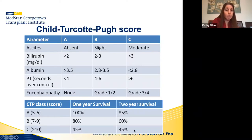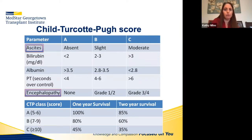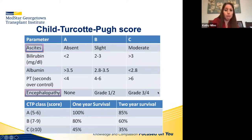The problem with CTP is that ascites and encephalopathy are both fairly subjective. If a patient has ascites, what does 'slight versus moderate' mean? What if they had ascites previously but are on diuretics and low-sodium diet and it's controlled but not gone? Same with encephalopathy — the grades are fairly clear-cut, but where do you put someone who has chronic low-grade encephalopathy with intermittent flares and hospitalizations? So the CTP score is very subjective for both prognosis and organ allocation.